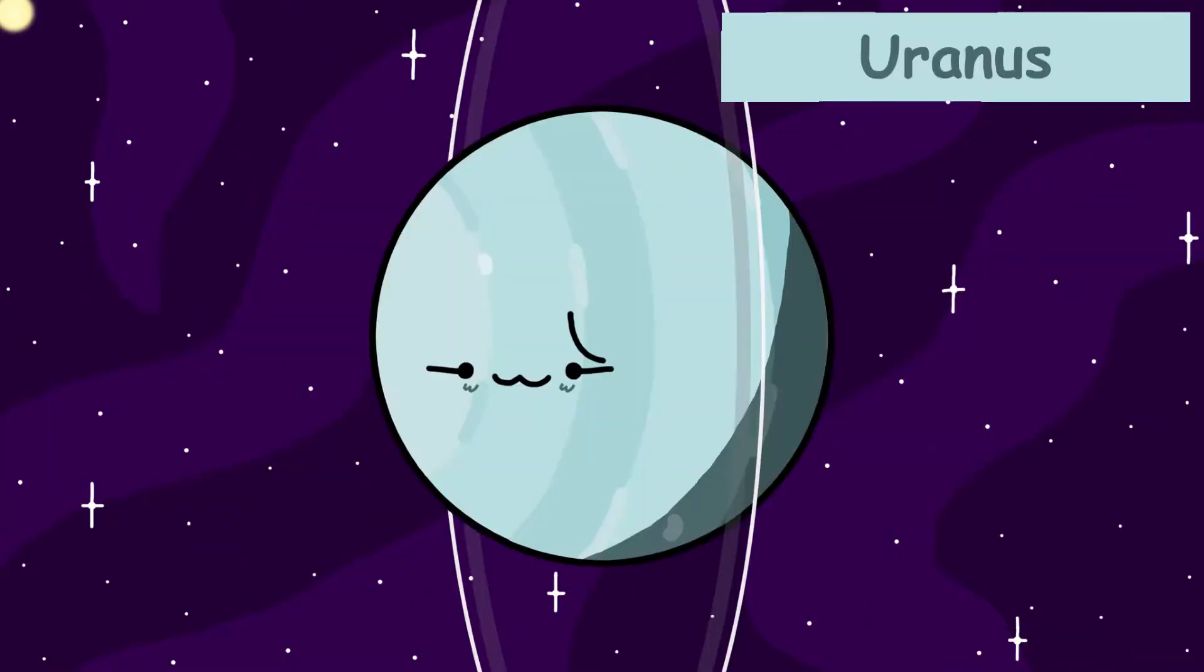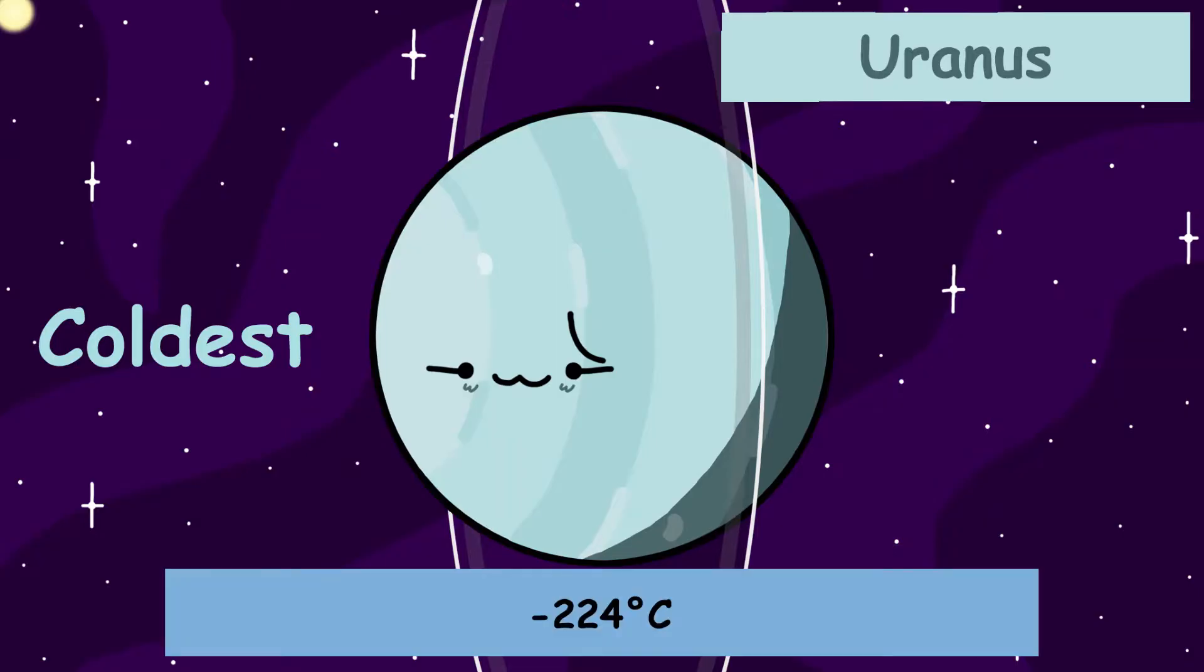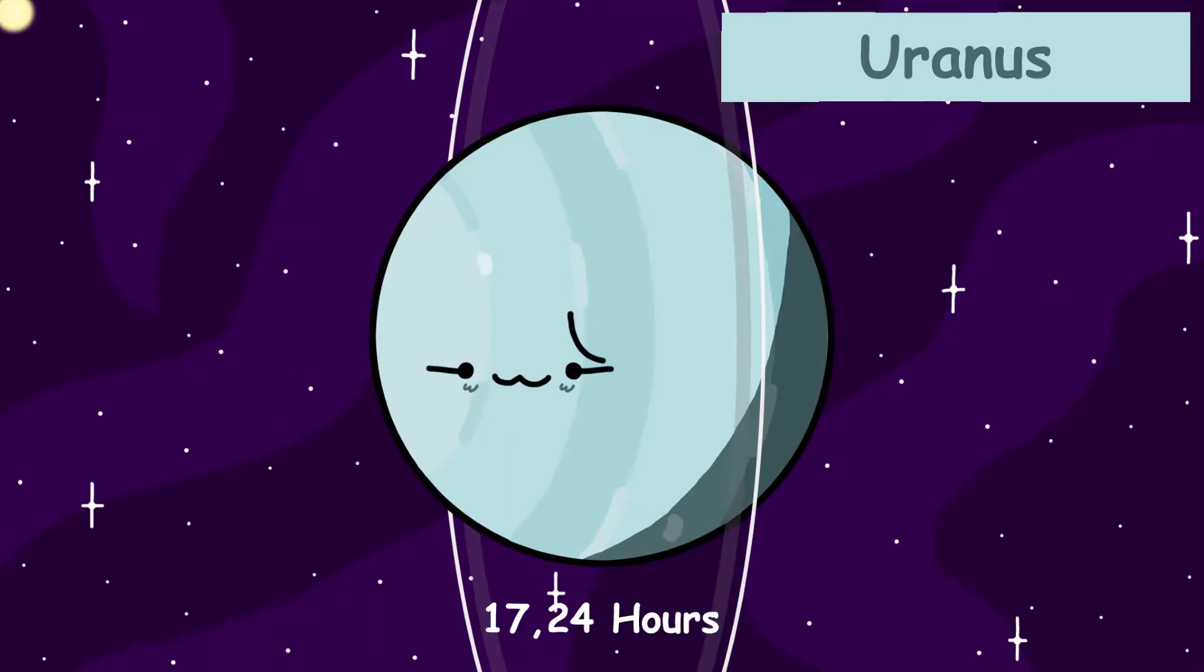Next up, we have Uranus. Uranus has a radius of 25,362 kilometers. Uranus is the coldest planet in the solar system, with an average surface temperature of negative 224 degrees Celsius. A day on Uranus would only be 17.24 hours. A year on Uranus would be 84 Earth years long.